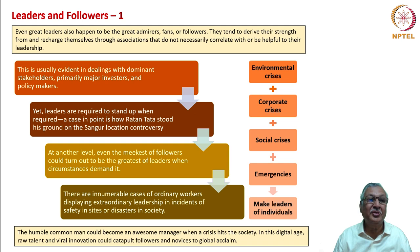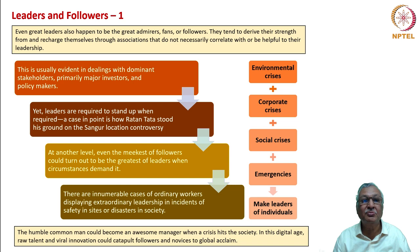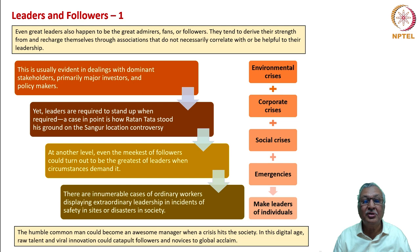Even great leaders are also great admirers, fans, or followers. They tend to derive their strength from associations that do not necessarily correlate with their leadership. This is usually evident in dealings with dominant stakeholders such as major investors and policy makers. Yet leaders are required to stand up when required — a case in point is how Ratan Tata stood his ground on the Singur location controversy for the Nano car project. Even the meekest followers could turn out to be the greatest of leaders when circumstances demand it.